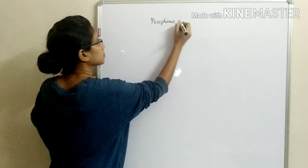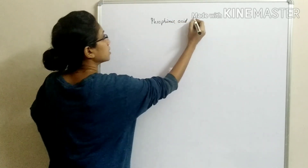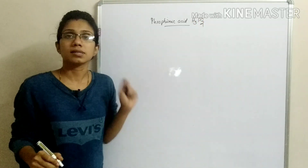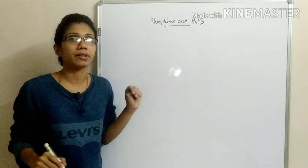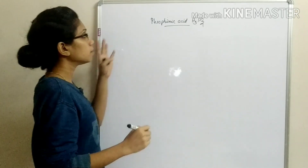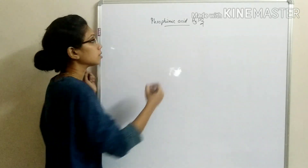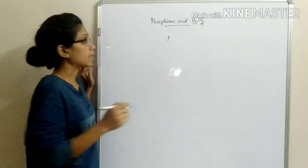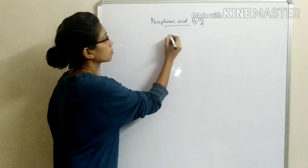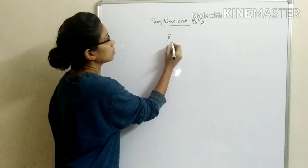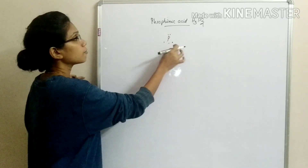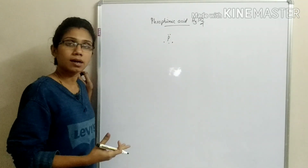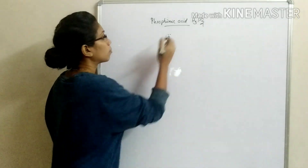Phosphinic acid, H3PO2. The structure is quite simple. We say P has 5 valence electrons — that's 10 electrons total. Counting 1, 2, 3, 4, 5 — for phosphinic acid there is a double bond O.